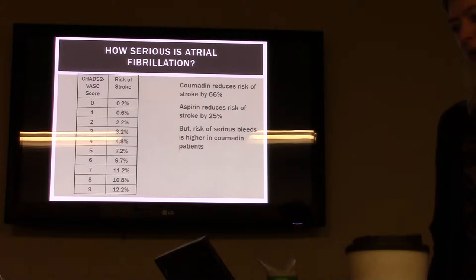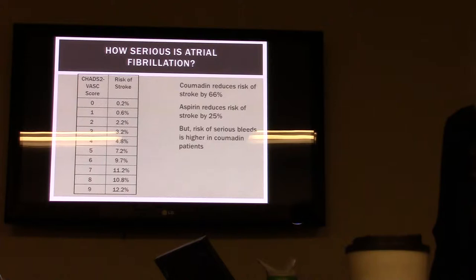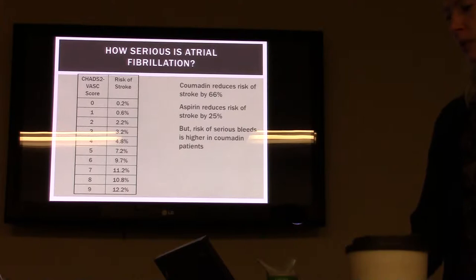Each of these scores correlates to a risk of stroke. If you have a patient on warfarin, that reduces the risk of stroke by two-thirds. Aspirin reduces the risk of stroke by one-fourth. But when you put a patient on warfarin you also have an increased risk of bleed, so you have to use that risk versus benefit. The higher the score, the more likely you're going to put them on warfarin.